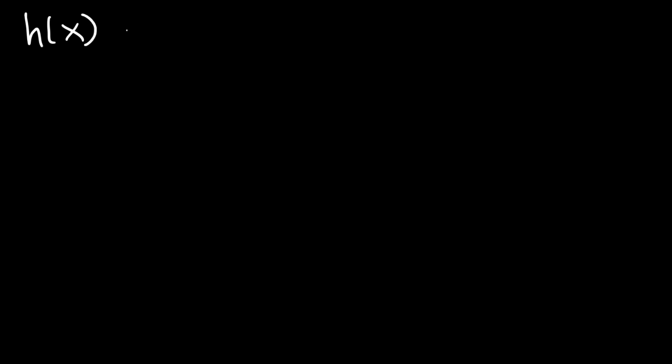Now let's try another problem. Let's say that h of x is x squared cosine x. Go ahead and determine the second derivative of this function. For this problem, we need to use the product rule.